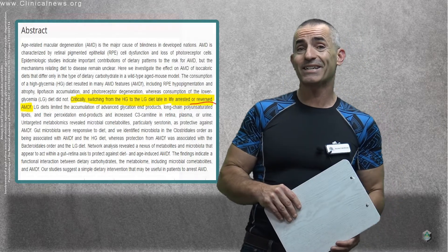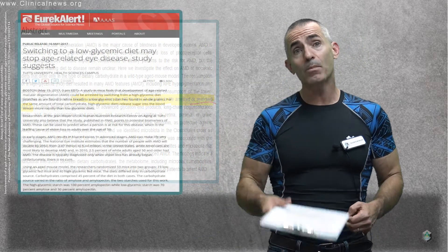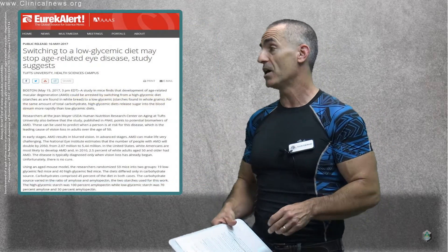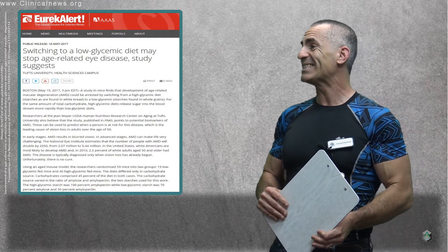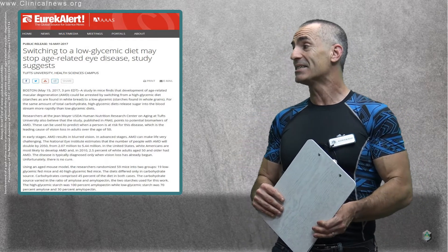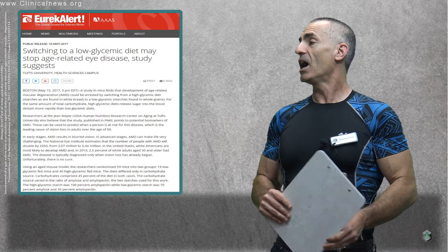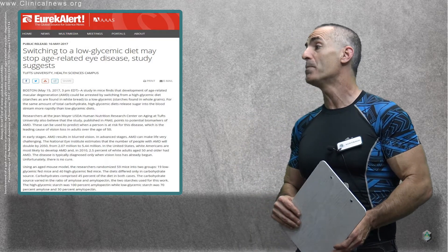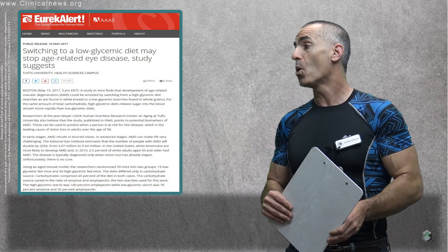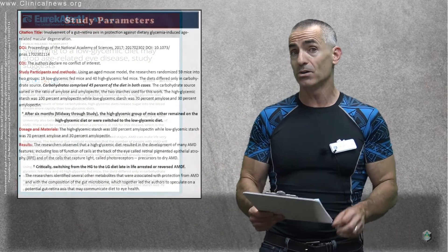So let's go right into the public citation so we could look a little bit deeper into this research and study parameters as well. Switching to a low-glycemic diet may stop age-related eye disease, studies suggest. A study finds the development of age-related macular degeneration could be arrested by switching from a high-glycemic diet to a low-glycemic. With that in mind, let's go right into the citation.